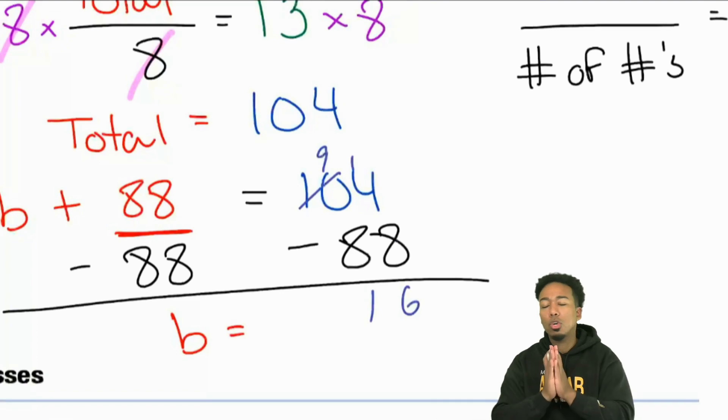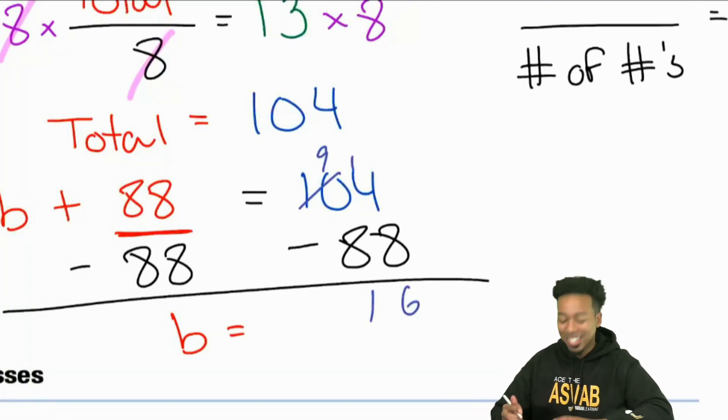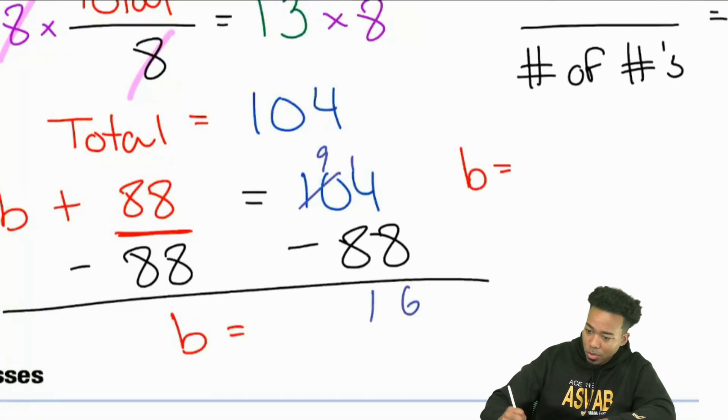But nonetheless, the answer, the missing number is going to be b equals 16. Booyah. And so right there, 16.